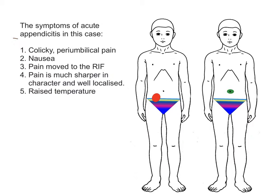One more feature of note is that the boy had a raised temperature on presentation. This happens a little further down the line in acute appendicitis, as it starts to localise in the right iliac fossa, and there may be suppuration or abscess formation starting to occur, with the body mounting a systemic response — a raised white cell count and increased temperature. But these signs do not need to be present for the early diagnosis of acute appendicitis.